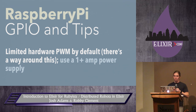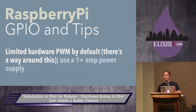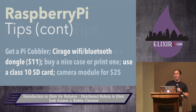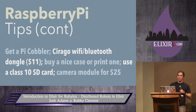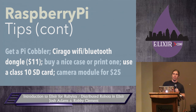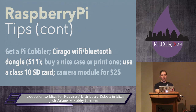Things to consider: you have limited hardware pulse width modulation out of the box, but we'll show you how to get around that. You also need at least a one amp power supply if you want to attach more stuff like a keyboard, mouse, Wi-Fi, Bluetooth adapter, webcam, or sensors like a compass, gyroscope, or accelerometer. We used the Pi Cobbler — it's a ribbon cable that attaches to your GPIO pins and connects to a breadboard. There's an $11 Sirago USB Wi-Fi Bluetooth adapter that's great for basic IO. Cases will keep you from shorting it out.